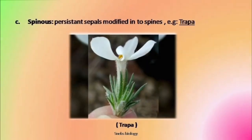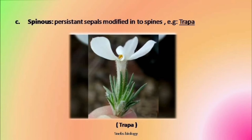The third modification is the sepals might become spiny — we call this modification spinous. It is seen in case of Trapa. In Trapa, these sepals become two pointy structures, with the edible part in between. Those pointy structures are nothing but the modified sepals.